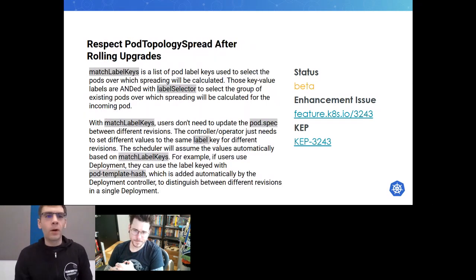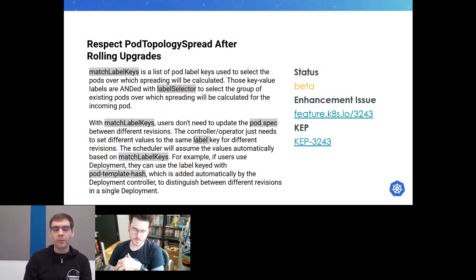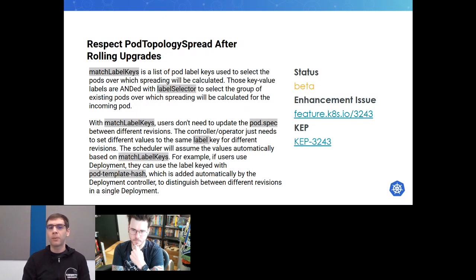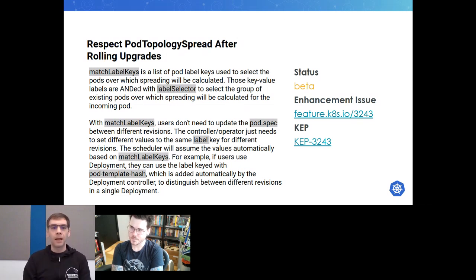There are improvements to how pod topology spread is calculated after rolling updates, going to beta. A new field called match label keys lets you specify label names, and the scheduler will look at the values in those keys in addition to your label selectors when processing rolling updates. A key use case is using the pod template hash, which helps the scheduler distinguish between revisions within deployments and spread them across whatever your pod topology spread defines.